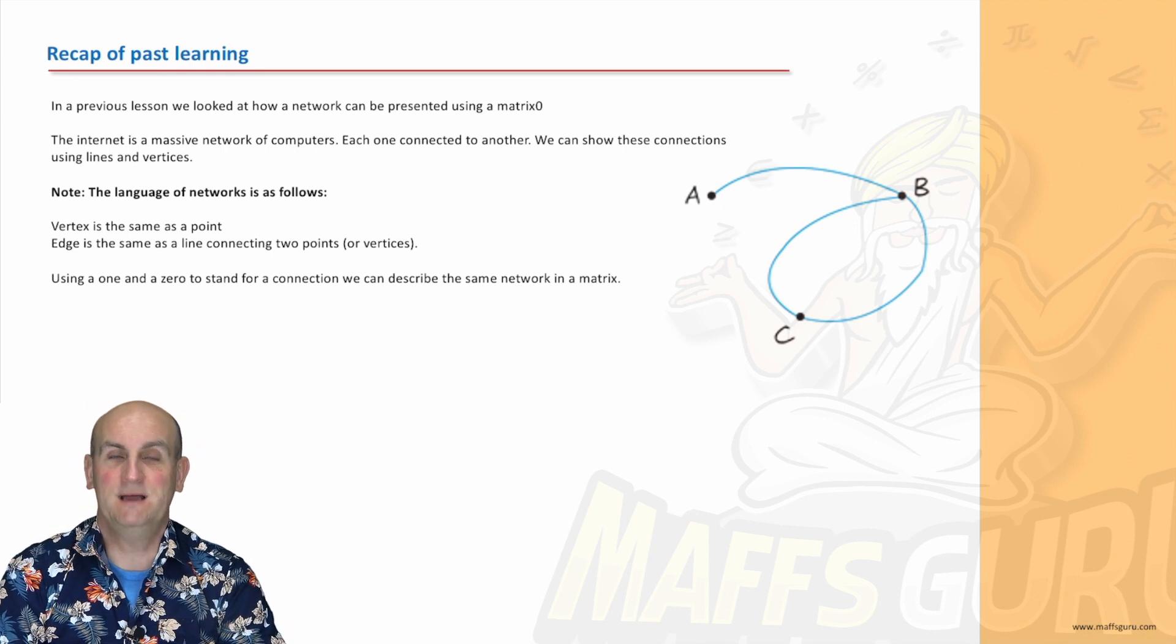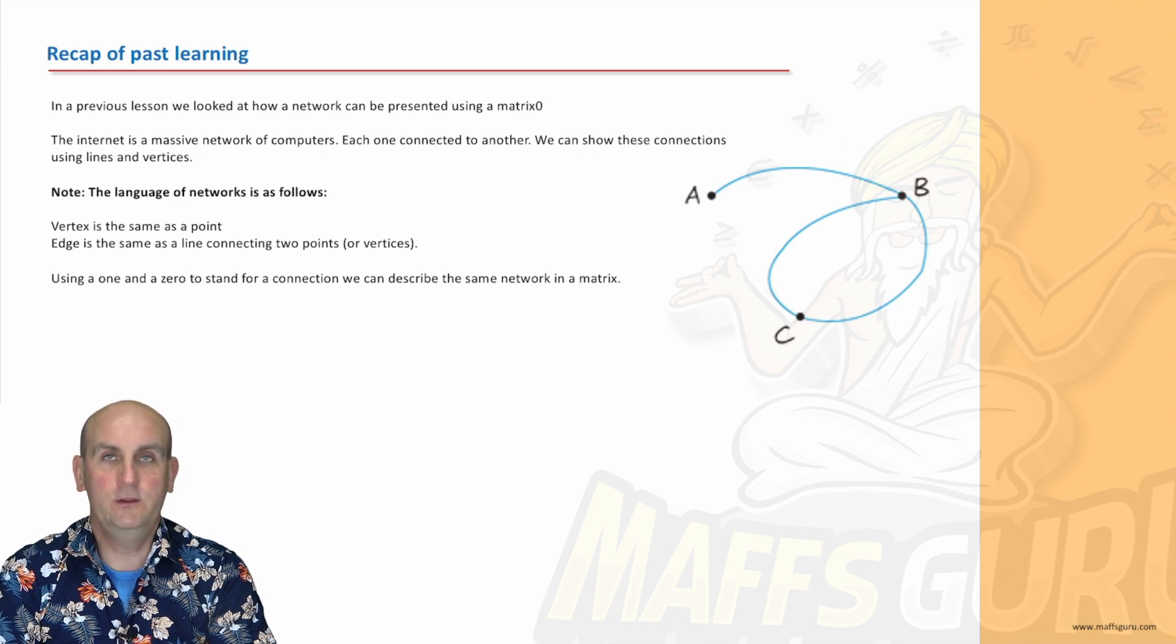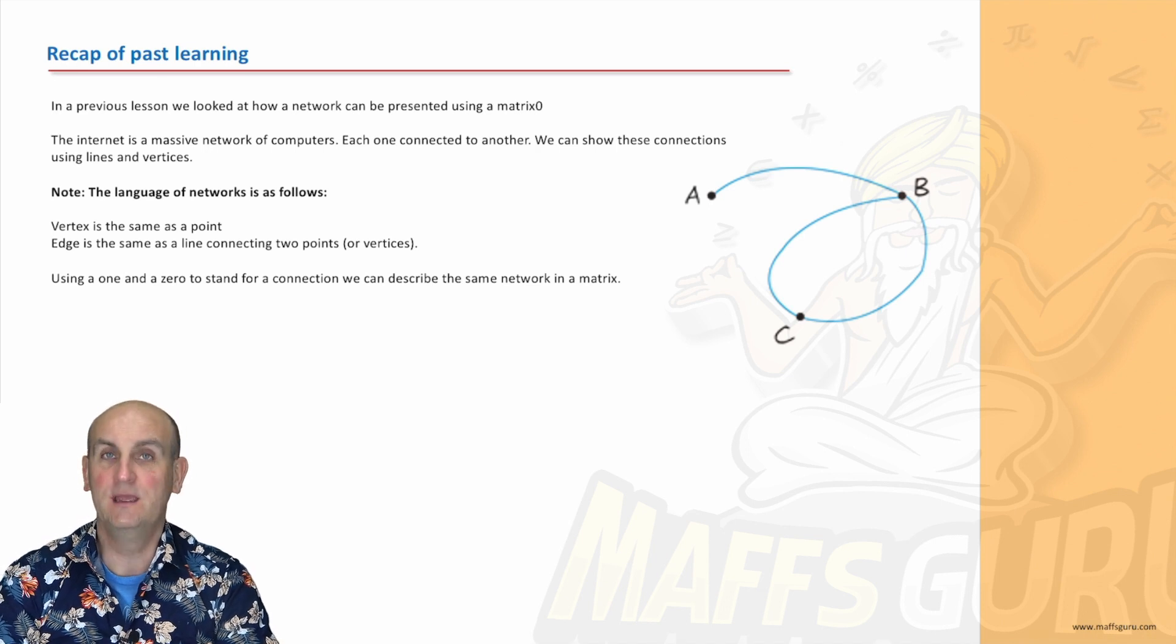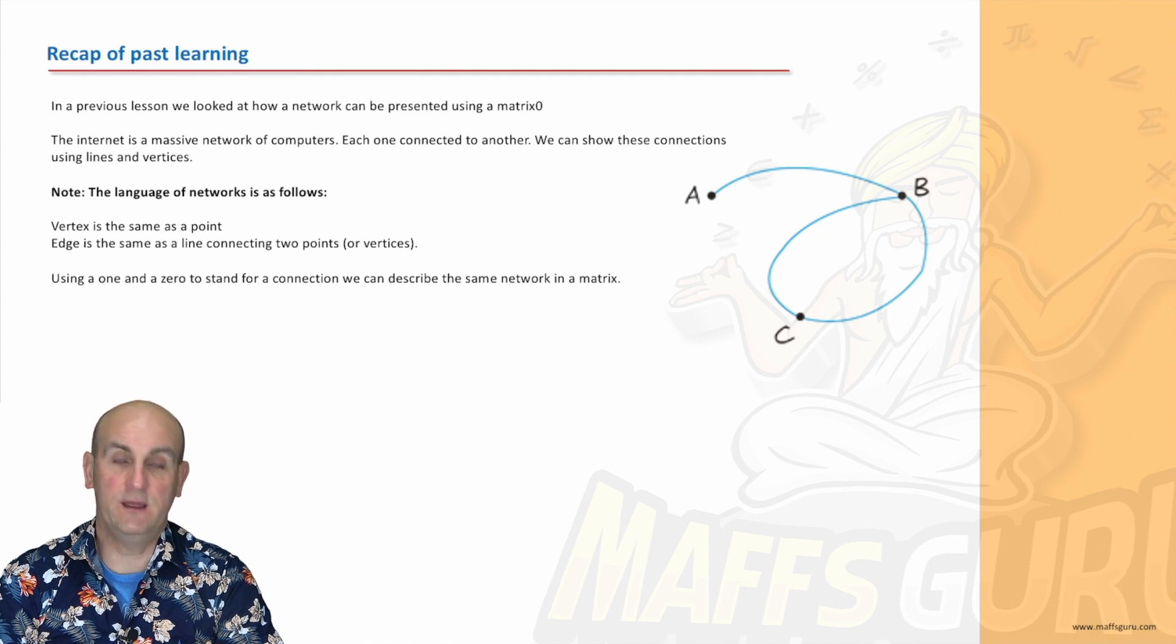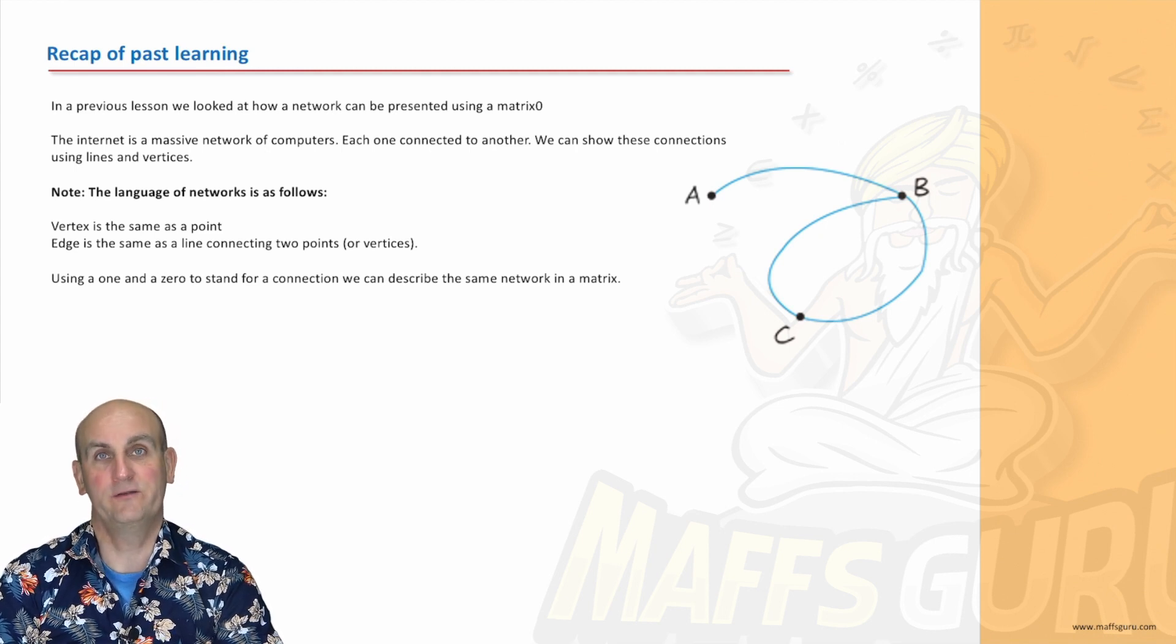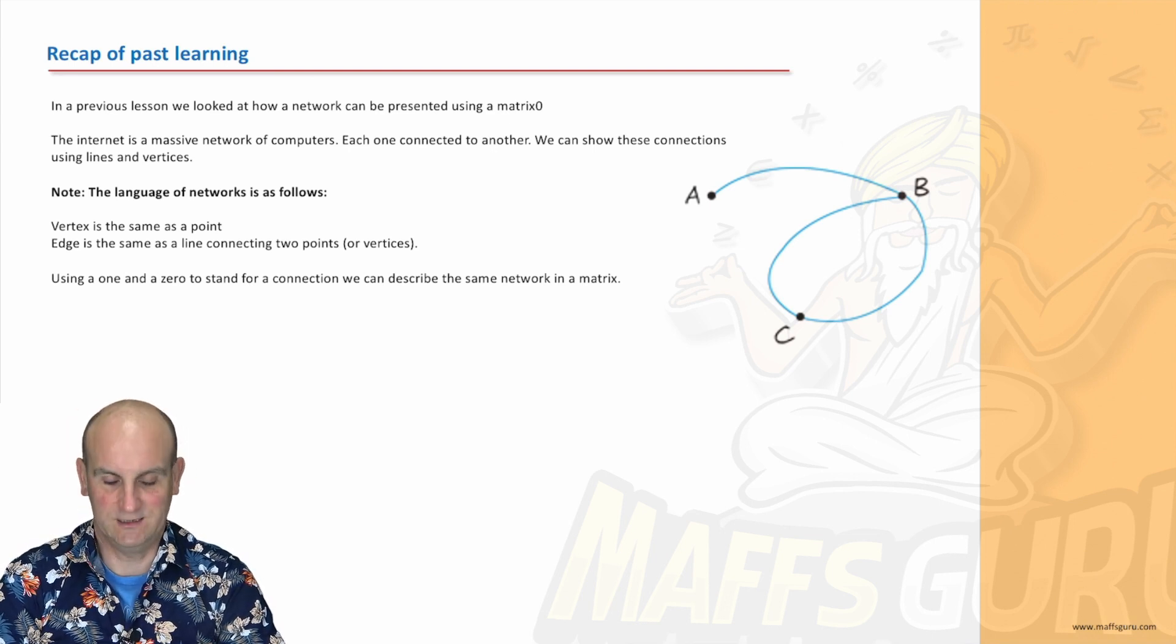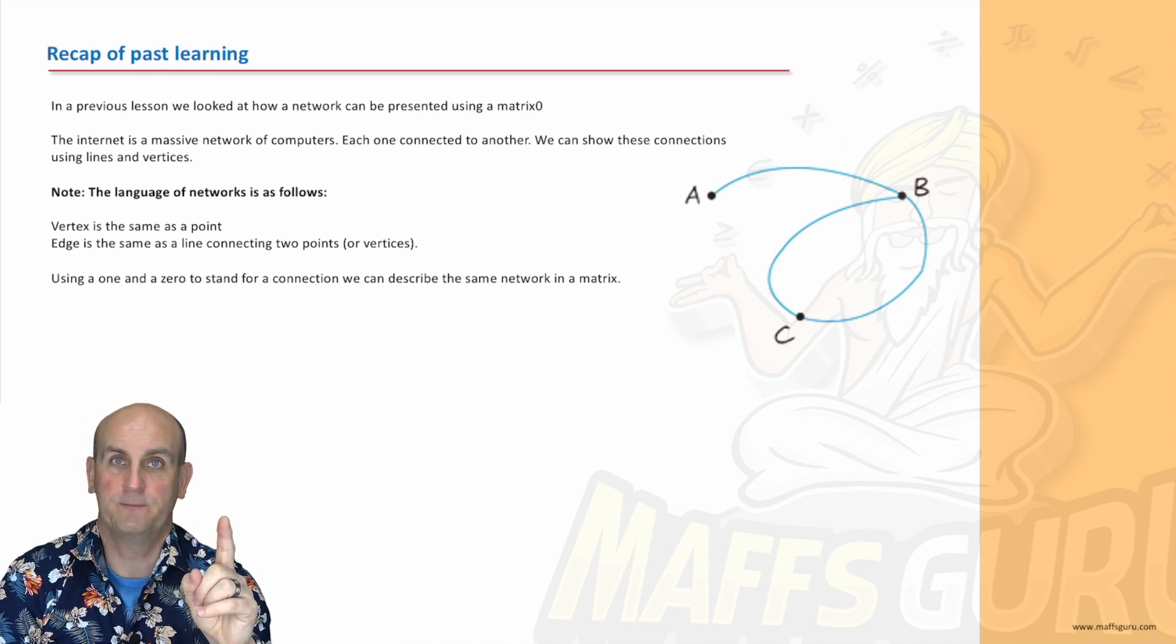Where there is a dot, there is a computer. Where there is a line, there is some sort of connection. Doesn't have to be physical. It can be a Wi-Fi connection to your hub or router. Now, Barry has come up with stupid words. You need to know vertex and edge. The vertex is basically a point, and an edge is basically a line connecting two points or vertices.